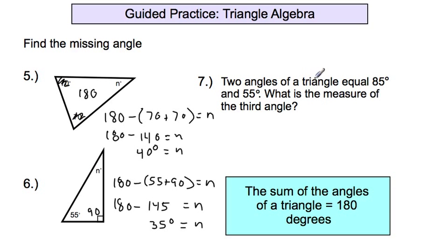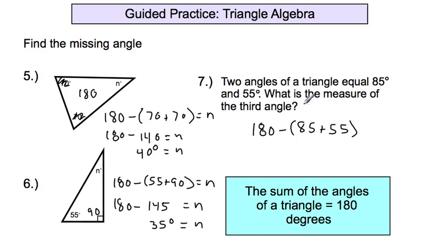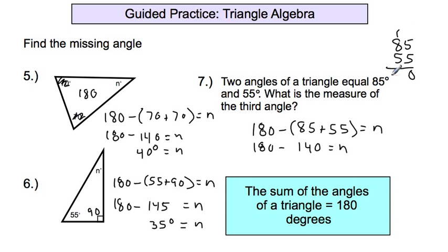Number 7: two angles of a triangle equal 85 and 55. What's the measure of the third angle? You don't have to draw this to figure it out — just start with 180 and subtract what you already know. Subtracting 85 and 55: 85 plus 55 is 140, so 180 minus 140 equals N. The third angle of the triangle equals 40 degrees.